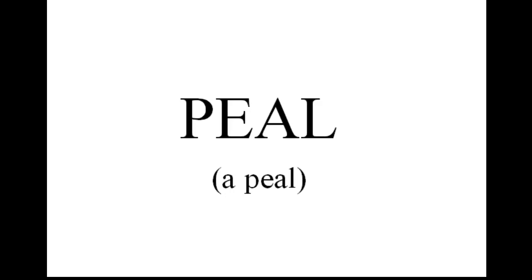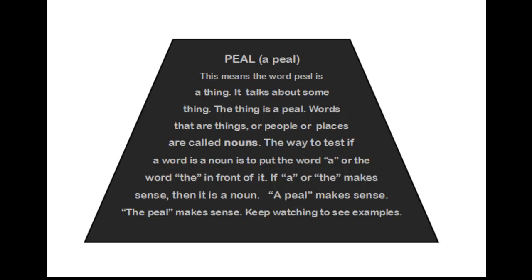Peel. A peal — spelled P-E-A-L. This means the word peel is a thing — it talks about something. The thing is a peel.